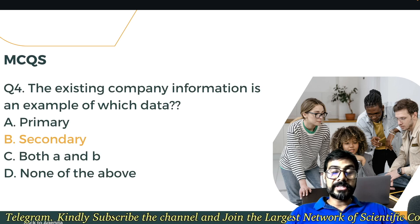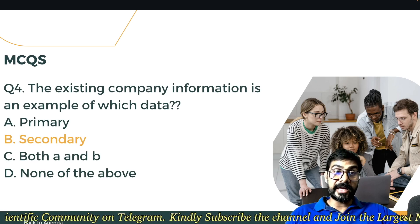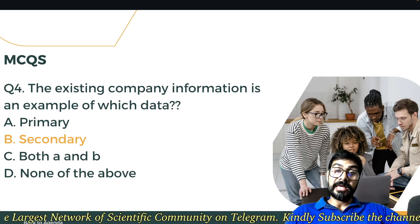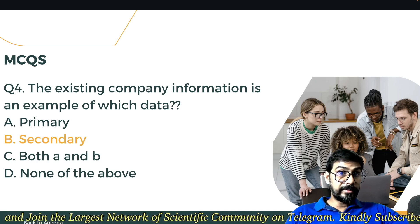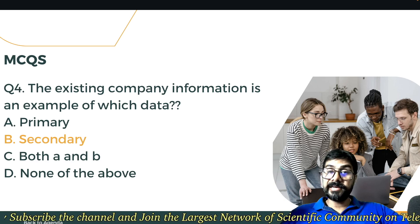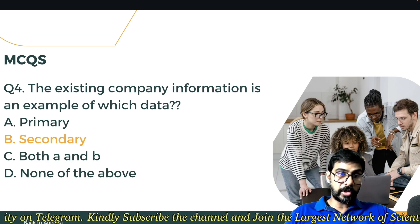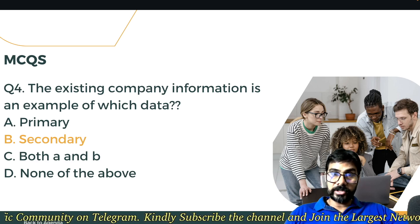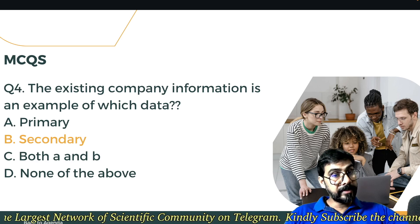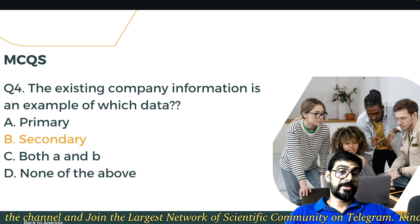The fourth question: existing company information is an example of which data? Existing company information is not primary. Secondary data always comes from primary data. So existing company information — that is the secondary data option.